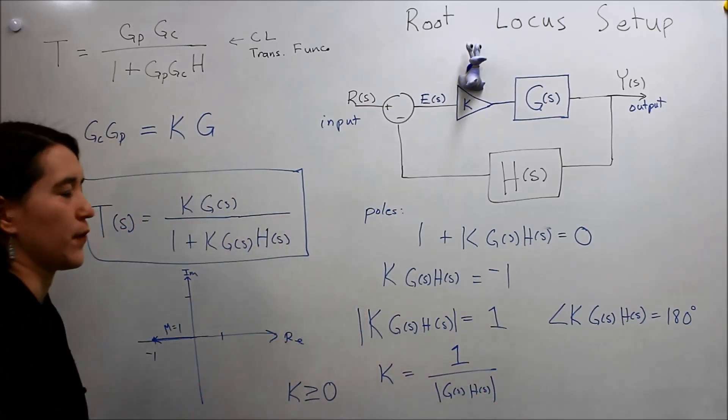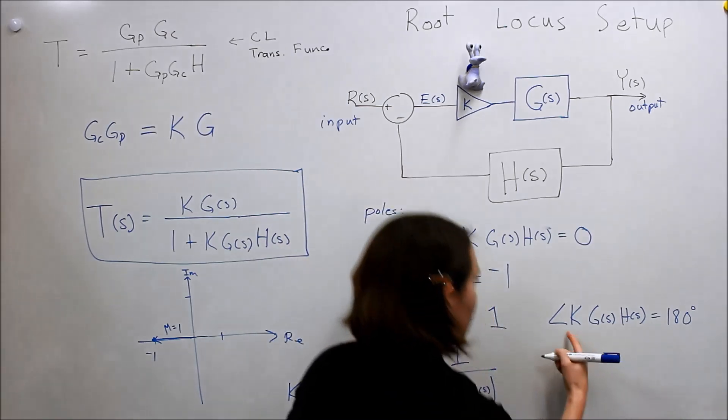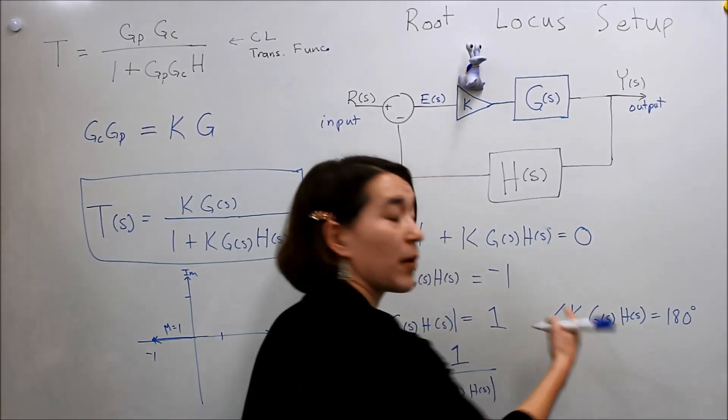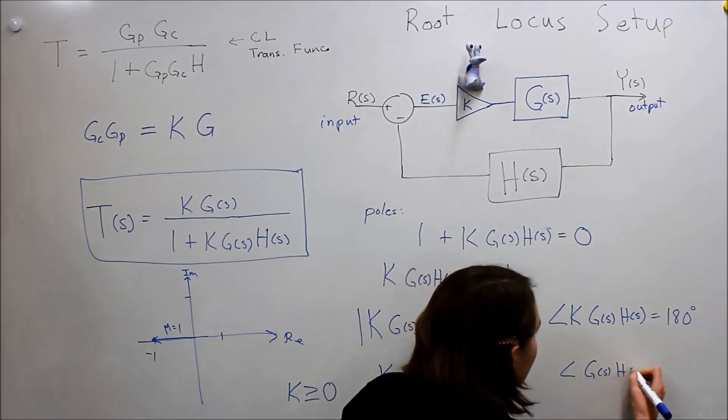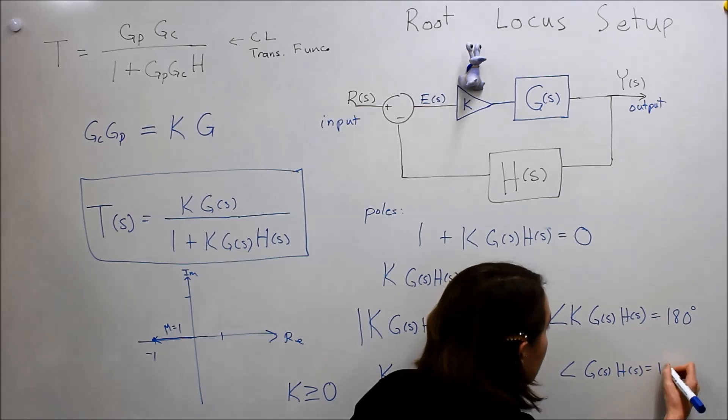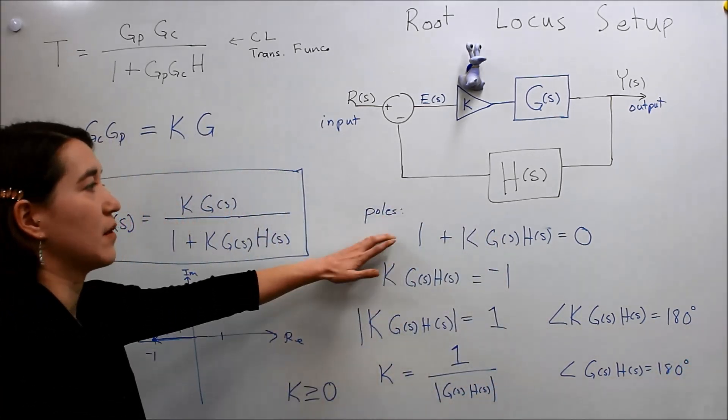And, kind of, break it down further. And, here, since K is just a scalar, you can take it out of the angle here. And, you know that the remaining part has to be a hundred and eighty. So, the angle of G of S, H of S, has to equal to one hundred and eighty, in order to satisfy the pole conditions.